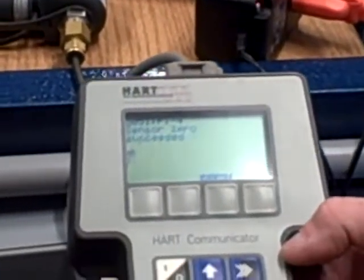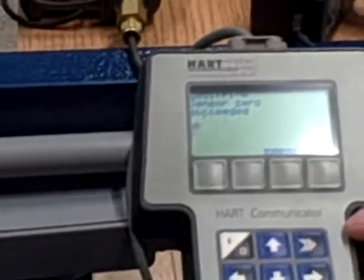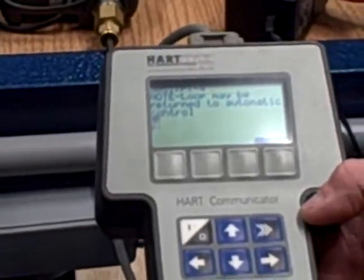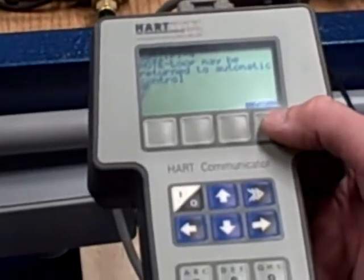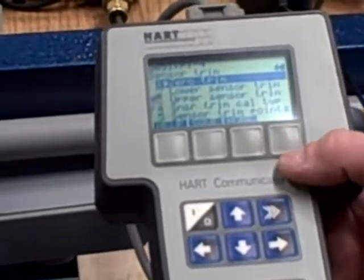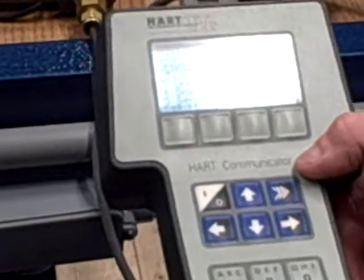Sensor input stabilizing. It is now averaging the measurements it takes of zero pressure. Okay. And it says loop may be returned to automatic control. So we didn't have to type in what the pressure was. It already assumed it was zero. And so if it was off a little bit, it's now made that adjustment.